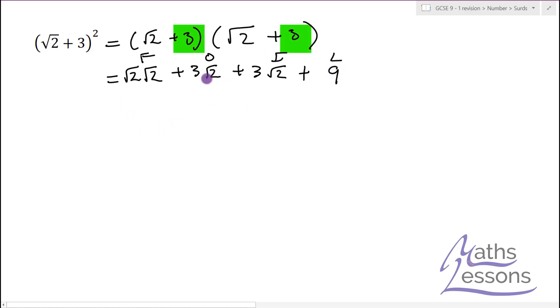Let's just finish this off. So √2 times √2 is 2. We've got 3√2 and 3√2 - see how these come together in the middle - so it gives me 6 lots of √2 plus the 9 on the end. So 2 plus 9 gives me 11 plus 6√2.